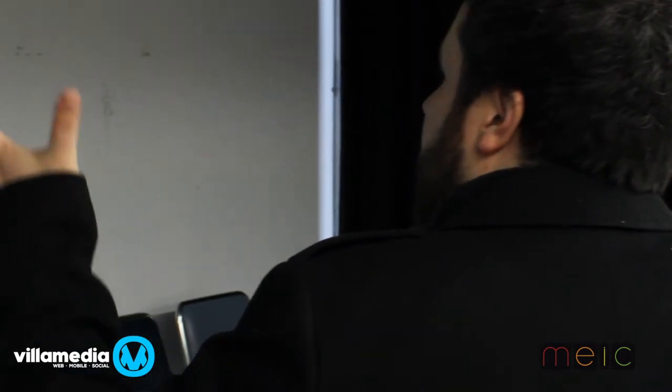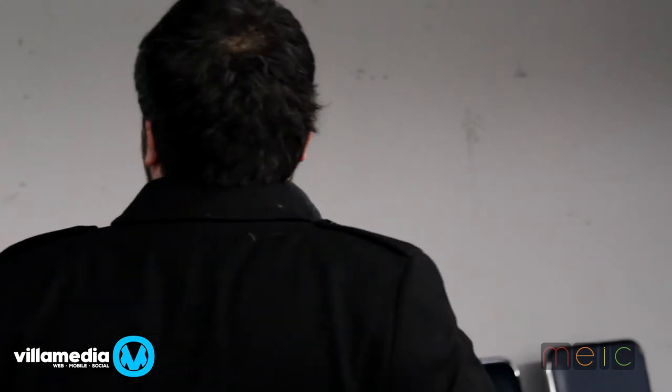For reference, if building a mobile site costs an average of $30,000, and building a native application costs an average of $30,000 per platform, if you have to be on three platforms you're tripling your cost, tripling your effort, tripling your headaches. It's a no-brainer that if I need to be on every platform and keep my budget low, I'm going to go web. But again, I won't have all the capabilities of the device.